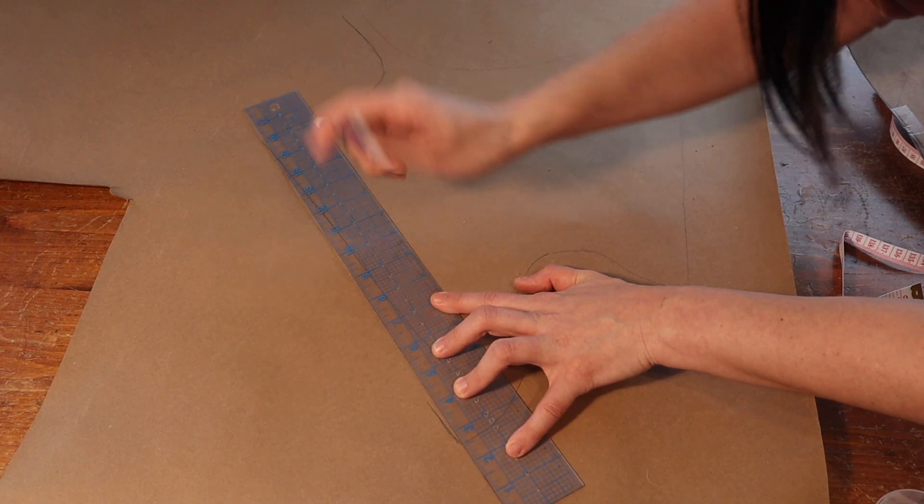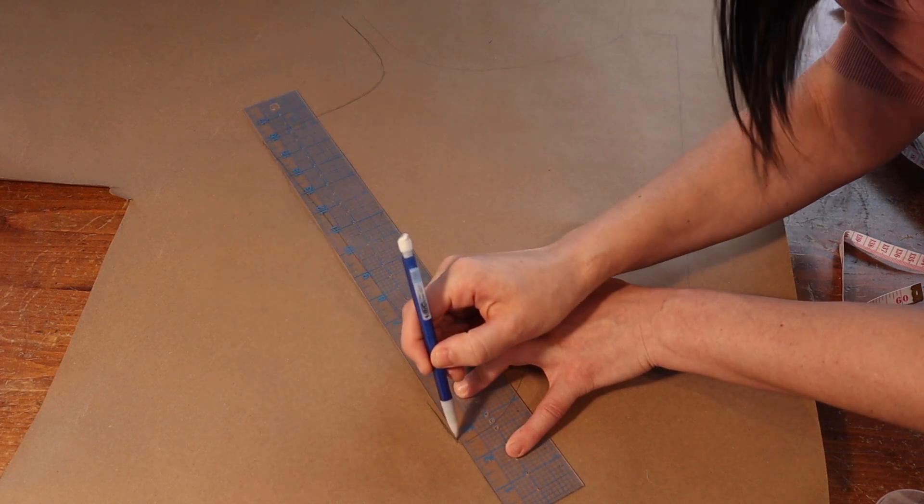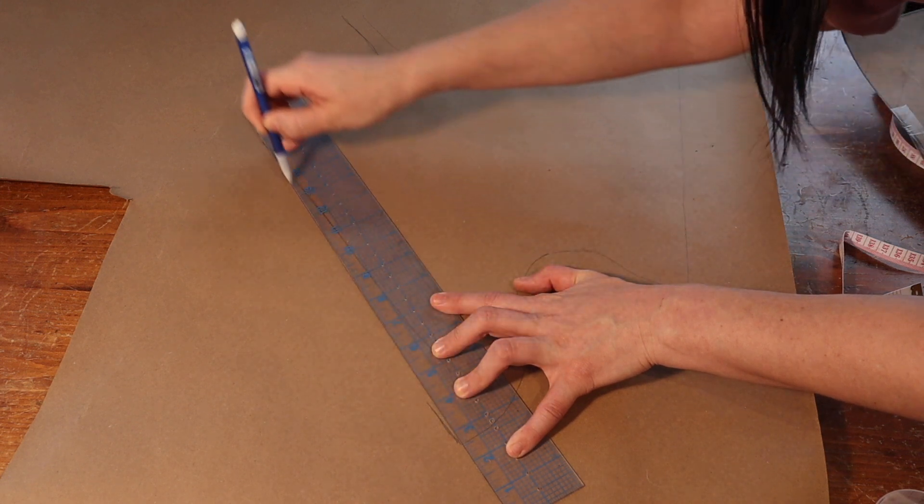Now I can redraw the center front and center back lines by connecting the top edge to the new lowered bottom edge. This means that all of my measurements for the bust, waist, and hips will stay the same as the original pattern.